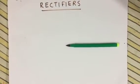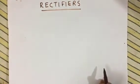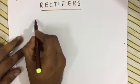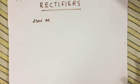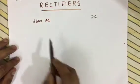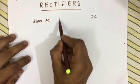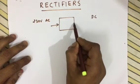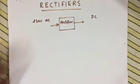Today we are going to learn about rectifiers. In our home, the power supply is 230 volt AC. Most devices we use at home, like TVs, mobile phones, radios, and VCD players, require DC. AC stands for alternating current and DC stands for direct current. We need a device or circuit that can convert AC to DC — that is known as a rectifier.